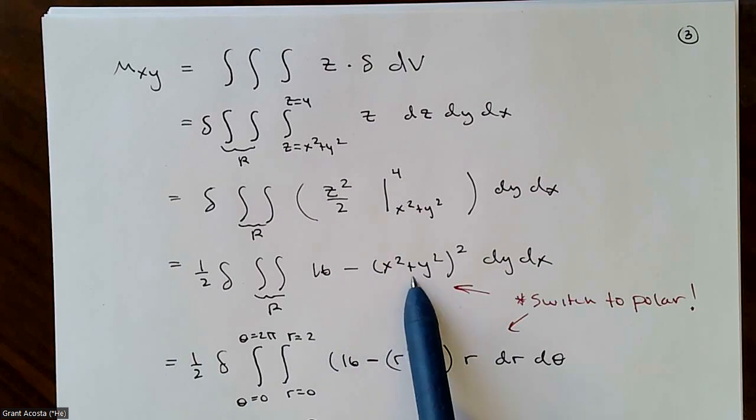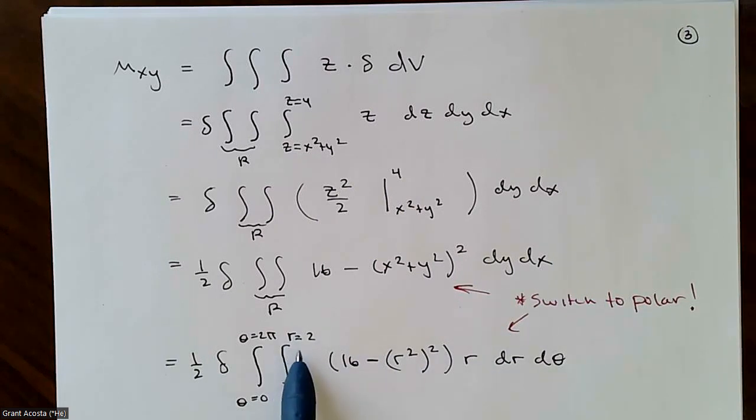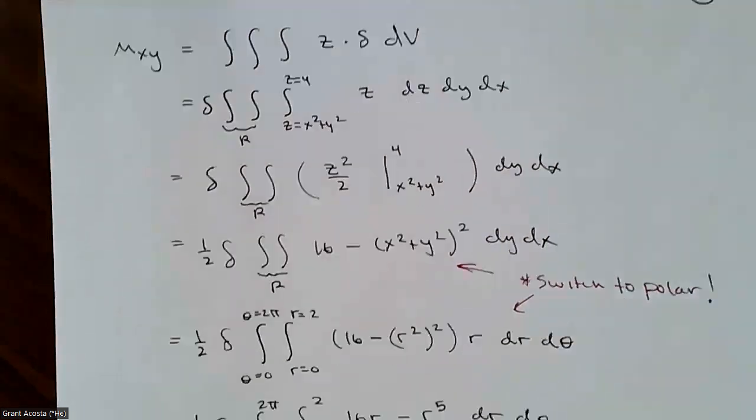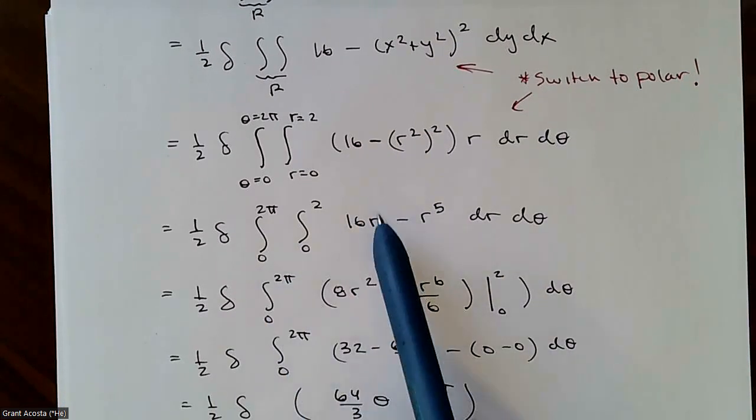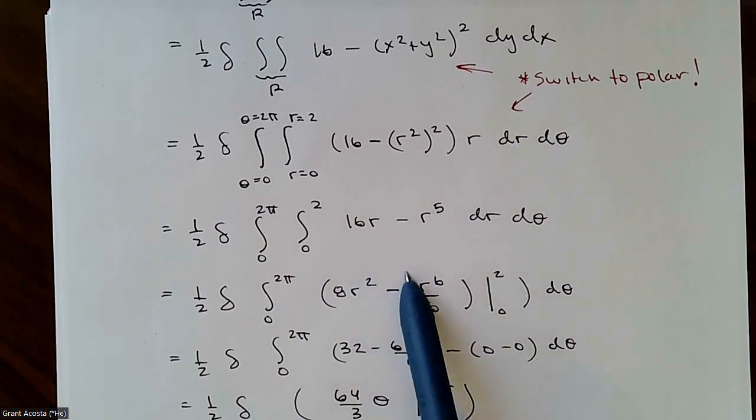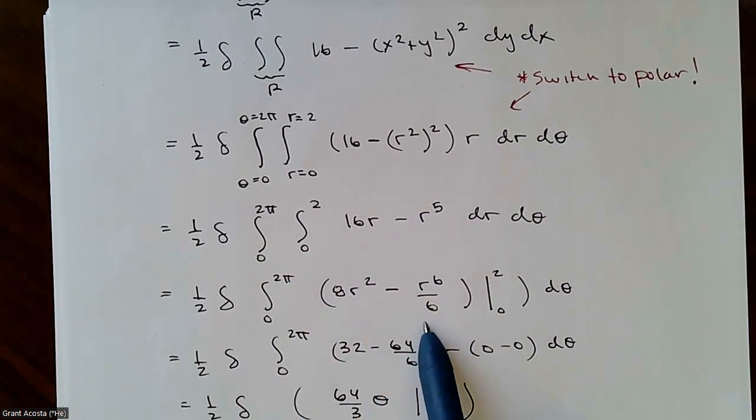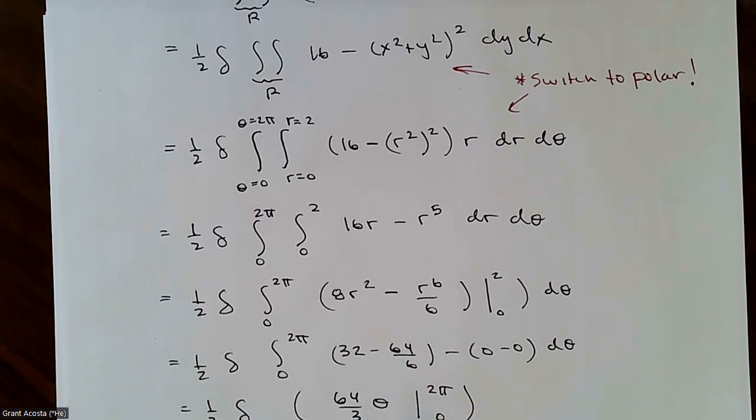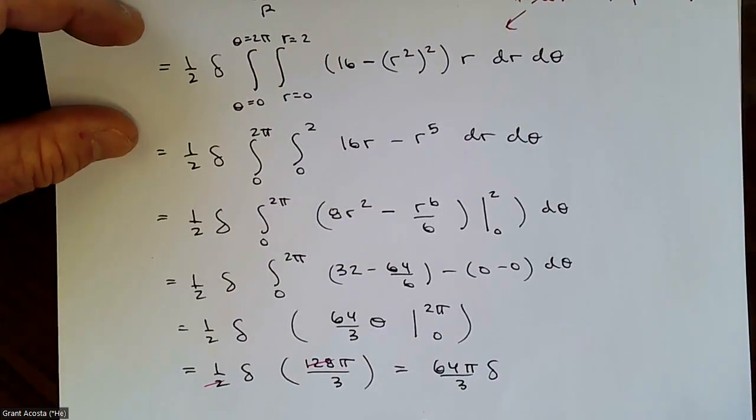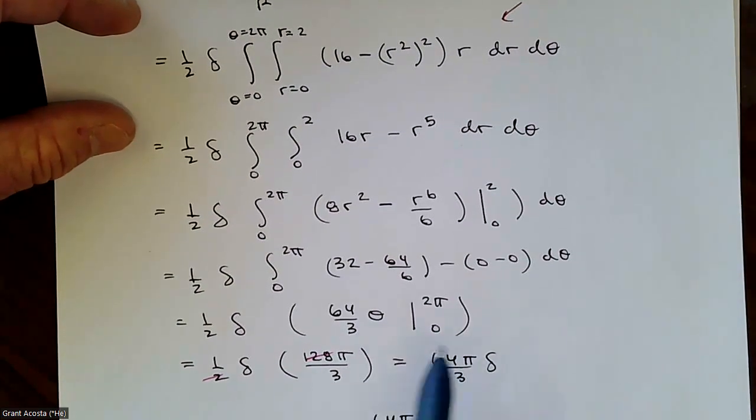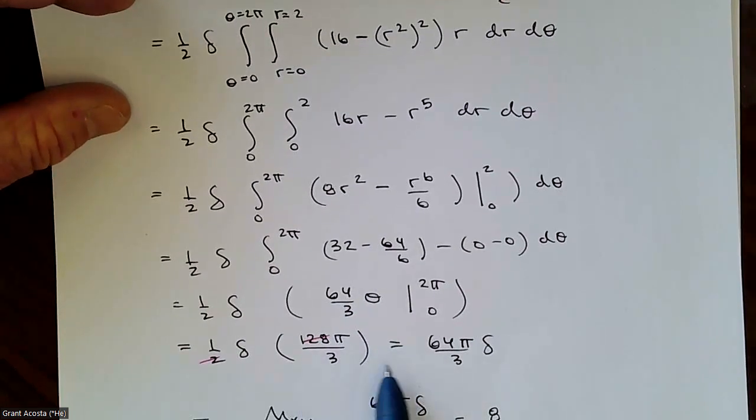So 16 minus r. This is r squared squared now. So it's really r to the fourth times r dr d-theta. Same limits of integration as the mass calculation. And now it's just a bunch of busy work. I've distributed and found my antiderivatives and plugged in. And hopefully this is right. If you catch an error, please let me know. I ended up getting for my final answer 64 pi over 3 times delta.